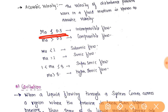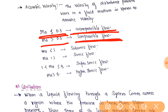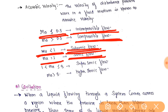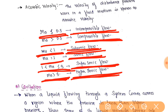Classification based on Mach number: if Mach number is less than 0.3, it is incompressible flow. If Mach number is greater than 0.3 and less than 1, it is subsonic flow. If Mach number equals 1, it is sonic flow. If Mach number is between 1 and 3, it is supersonic flow. And if Mach number is greater than 3, it is hypersonic flow.